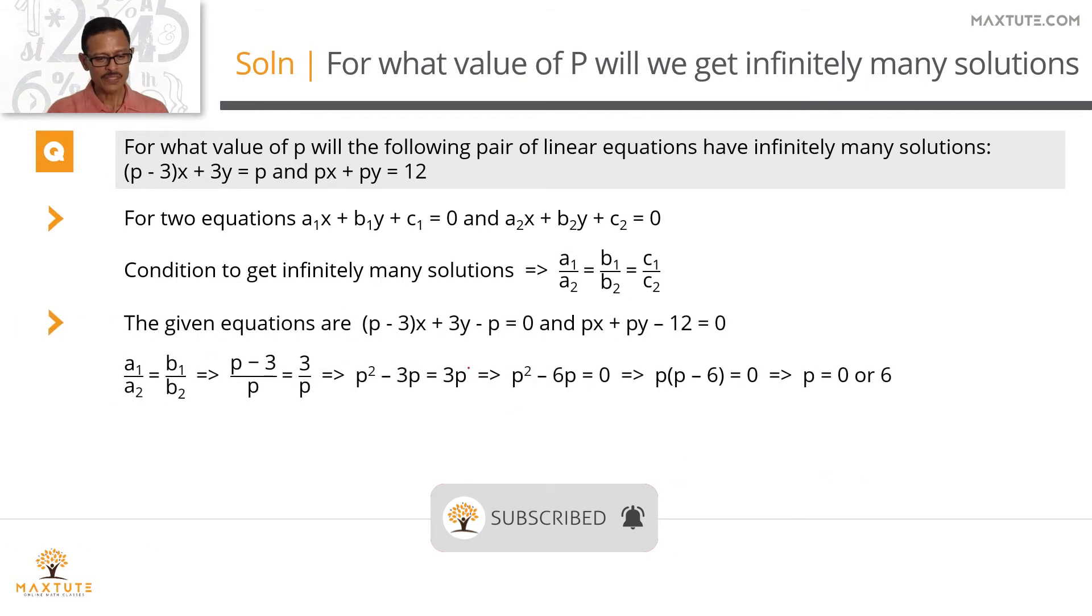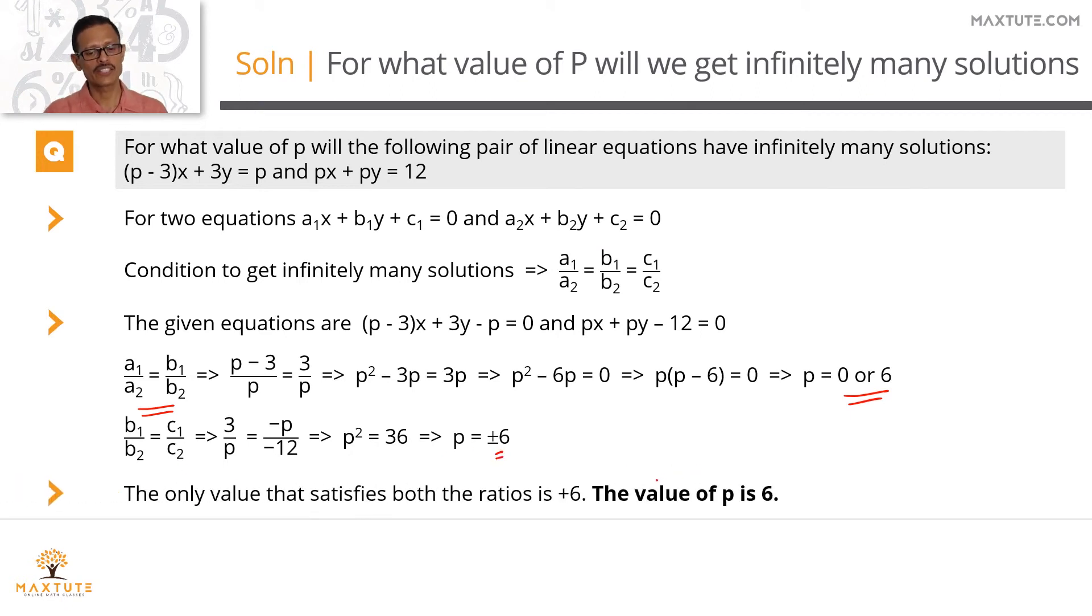Let me quickly summarize it in a printed form. These are the equations given to us. We're equating a1 by a2 to be equal to b1 by b2. We've got two values for p: p equals 0 or p equals 6. We're running through the same exercise with b1 by b2 equals c1 by c2. We've got two values for p: plus or minus 6. The value of p which is common to both these ratios is plus 6. So value of p equals 6.